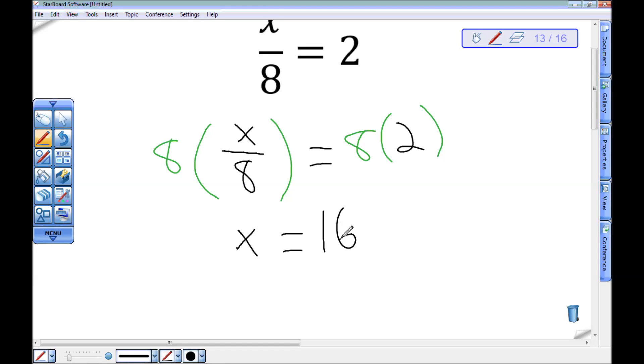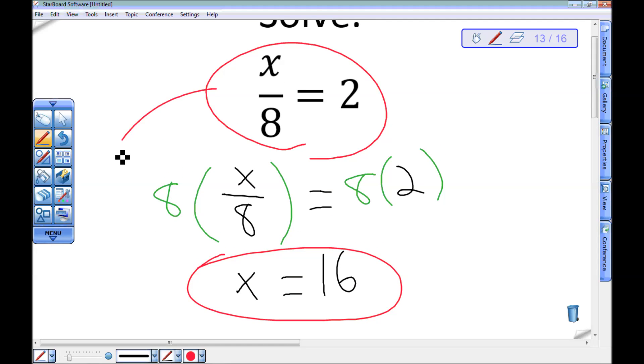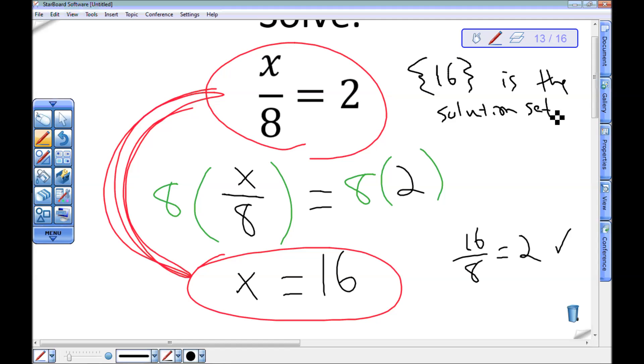8 times 2 is very much 16. So this has the solution set 16. Since that equation is equivalent to this one, this equation must also have the solution set of 16. I can check: 16 divided by 8 is in fact 2. So the set containing 16 is the solution set of x divided by 8 equals 2.